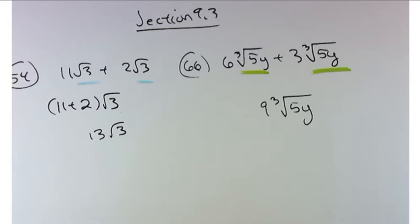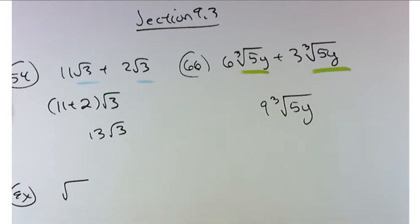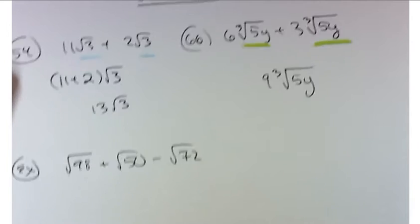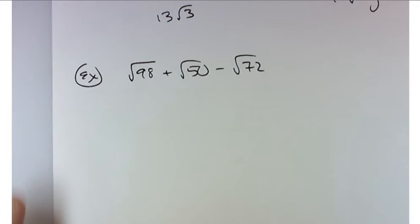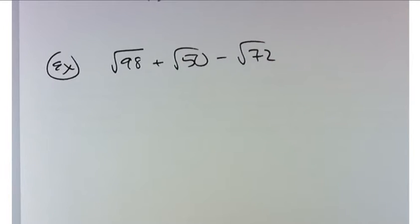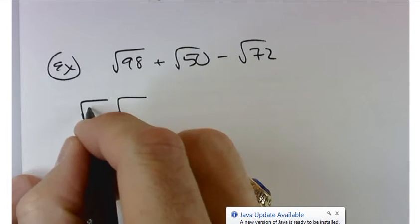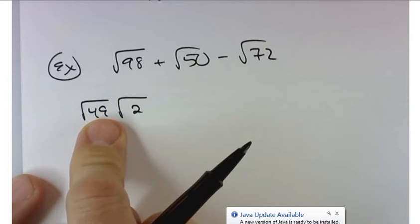What we did the other day is we practiced working with things that had like terms. Let me give you an example based on something in the book: square root of 98 plus the square root of 50 minus the square root of 72. At first glance there's no like terms there and you're right, but there is some stuff that we can do with each of these to get further along. What we want to do is break up each of these into square root of a perfect square times a number.